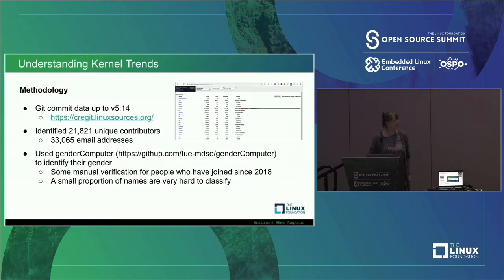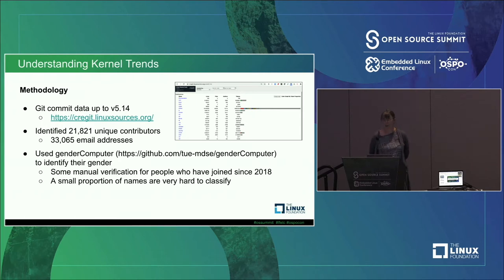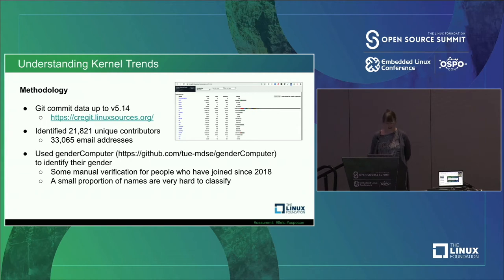One of the tools we've been using is a project called Kregit, which looks at the Git history in the Linux kernel over the years. Linux sources.org allows anyone to explore who's made which contributions and what's going on. We've identified over 21,000 unique contributors, with 33,000 emails associated with those 21,000 contributors — a rather large dataset.